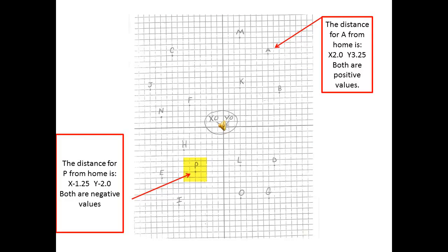Now if we look at point P, that's going to be in our negative quadrant — the bottom left quadrant. The distance for P from home is going to be negative 1 and a quarter inches in the x-axis, and coming down in the y-axis it's going to be negative 2 inches. Both of these values are negative.